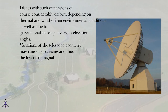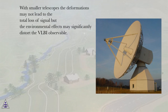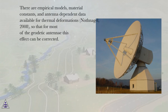Dishes with such dimensions are of course considerably deformed depending on thermal and wind-driven environmental conditions as well as due to gravitational sagging at various elevation angles. Variations of the telescope geometry may cause defocusing and thus loss of the signal. In particular, large steerable telescopes such as Effelsberg, Germany, need to move the feed horn and with it the focal point of the reflector according to the elevation angle of the observation to remain focused. With smaller telescopes the deformations may not lead to total loss of signal, but the environmental effects may significantly distort the VLBI observable. There are empirical models, material constants, and antenna-dependent data available for thermal deformations, so that for most geodetic antennae this effect can be corrected.